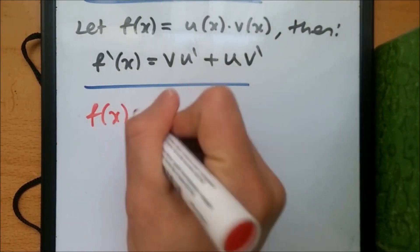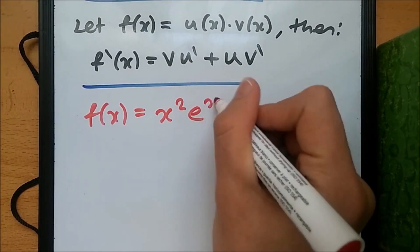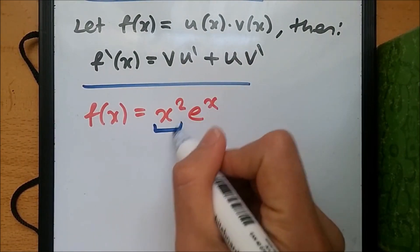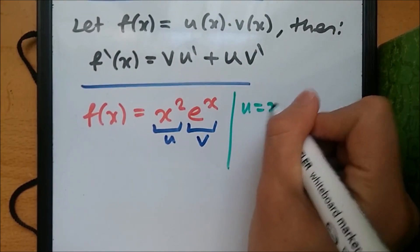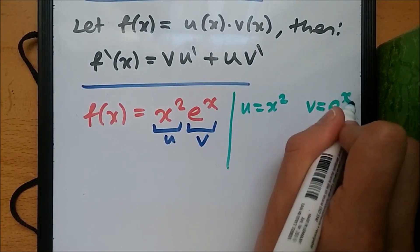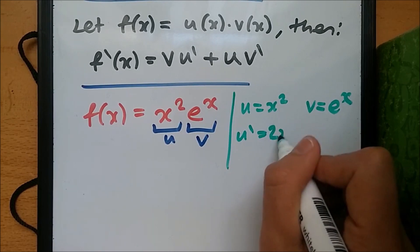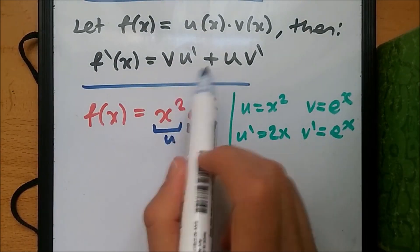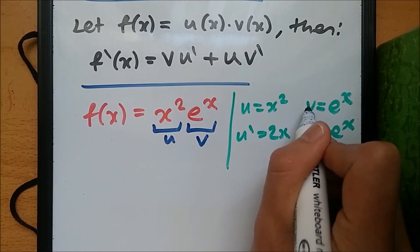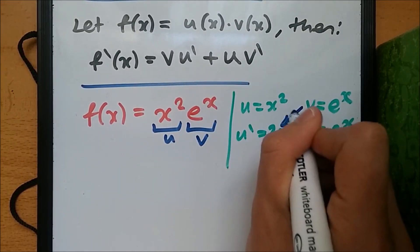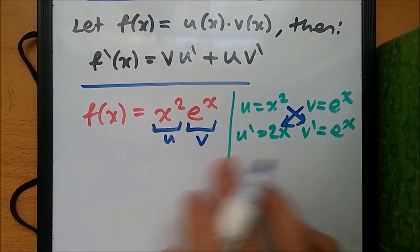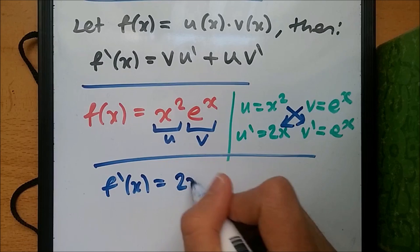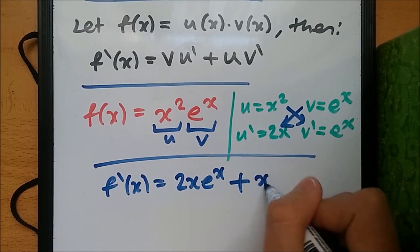Suppose we have y equals x squared times eˣ. We let u equal x squared and v equal eˣ. Taking the first derivative: u prime is 2x, and v prime is eˣ (since the derivative of eˣ is eˣ). Using the product rule — v times u prime plus u times v prime — we get eˣ times 2x, plus x squared times eˣ, giving us 2x·eˣ plus x²·eˣ.